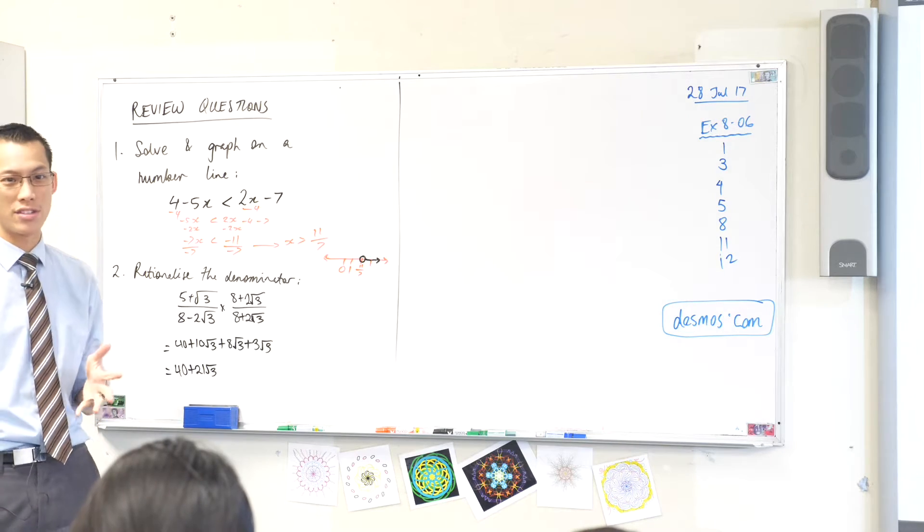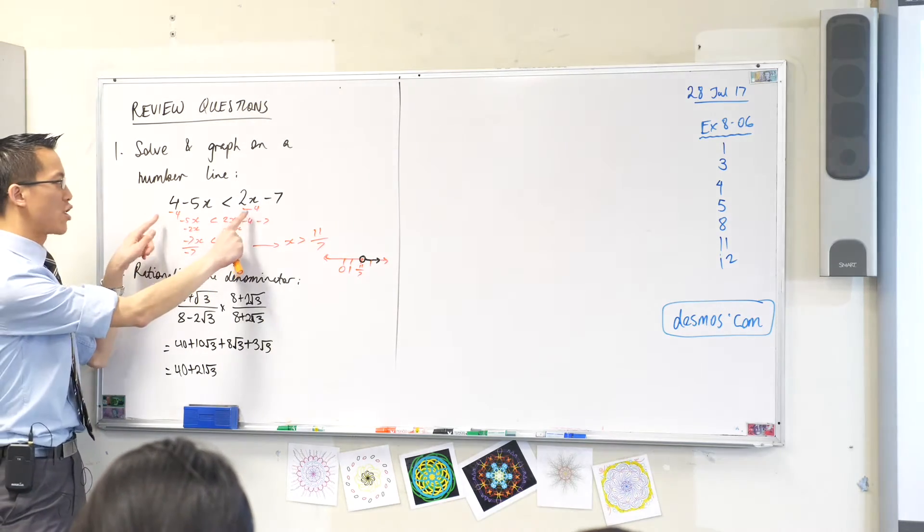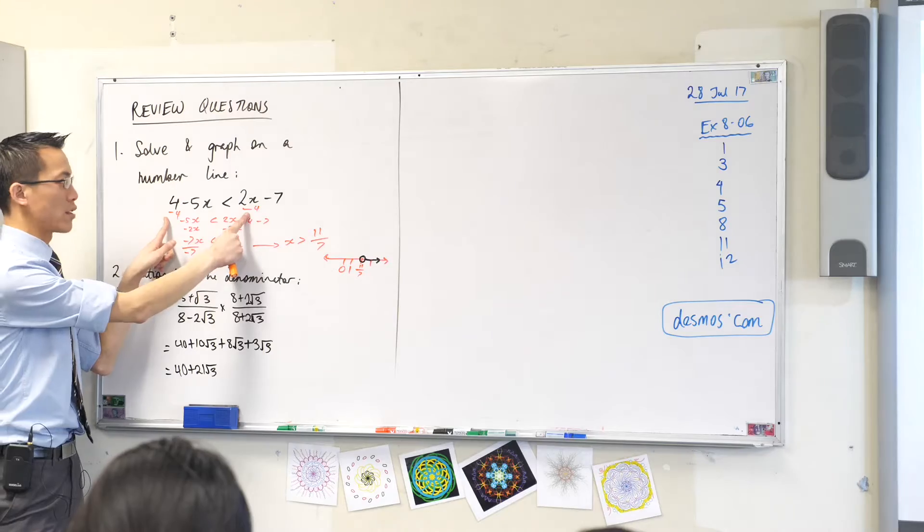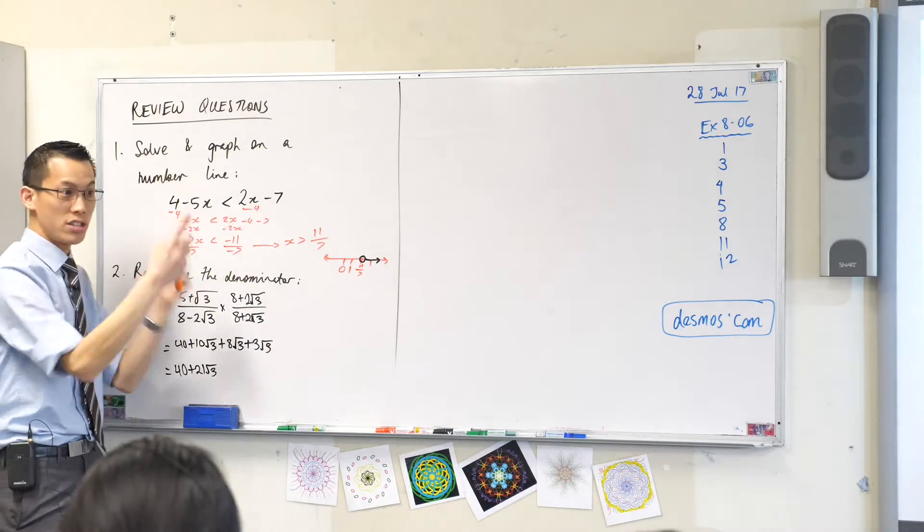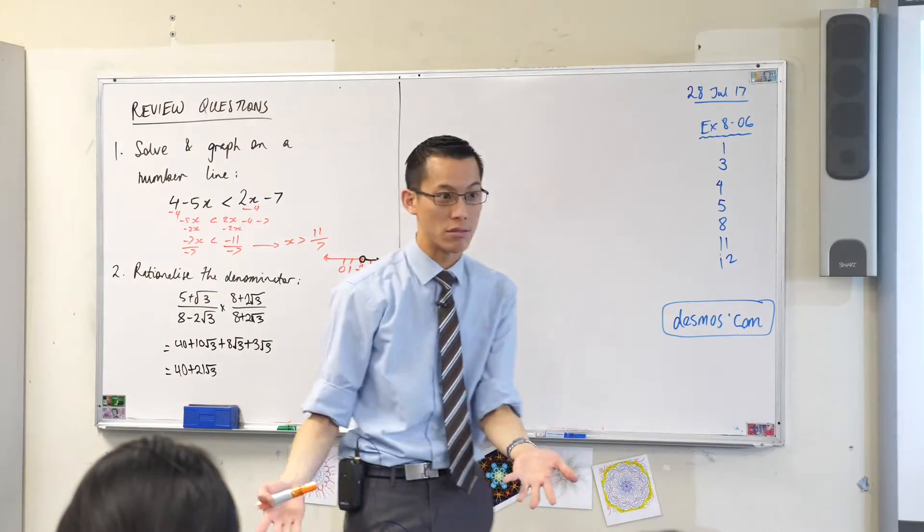Inequalities behave just like equations in many ways. For instance, you can see the very first thing that YZ has done is subtract 4 from both sides, which is just like something you would do for an equation.